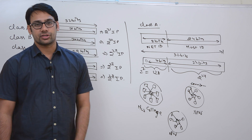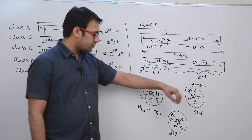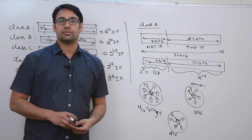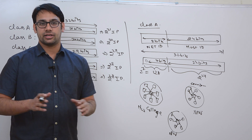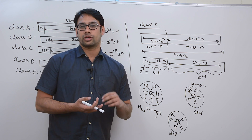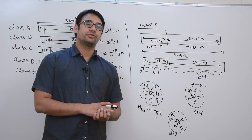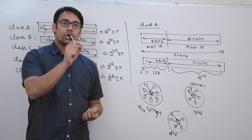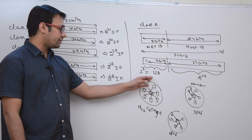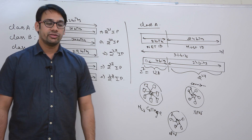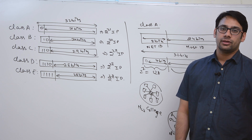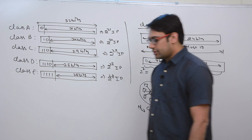We can have 2 raised to power 7 different networks. When we talk about hosts, it means within this network, how many devices are connected — for example, your mobile phone and laptop connected via Wi-Fi. In class A, there can be 128 networks and in every network there can be 2 raised to power 24 hosts, which is practically impossible — it is a very large number, so class A is generally not used in real-world practice.